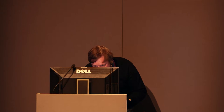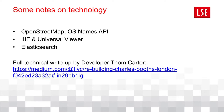Hopefully that gives you a sense of the site and some of the challenges we were thinking about. On the technology side, we used OpenStreetMap and the OS Names API to allow the searching I showed you. IIIF and Universal Viewer I've already talked about. We used Elasticsearch to index the metadata of the notebooks. There's a full technical write-up by our developer Tom Carter at a URL I'll tweet out after the session.